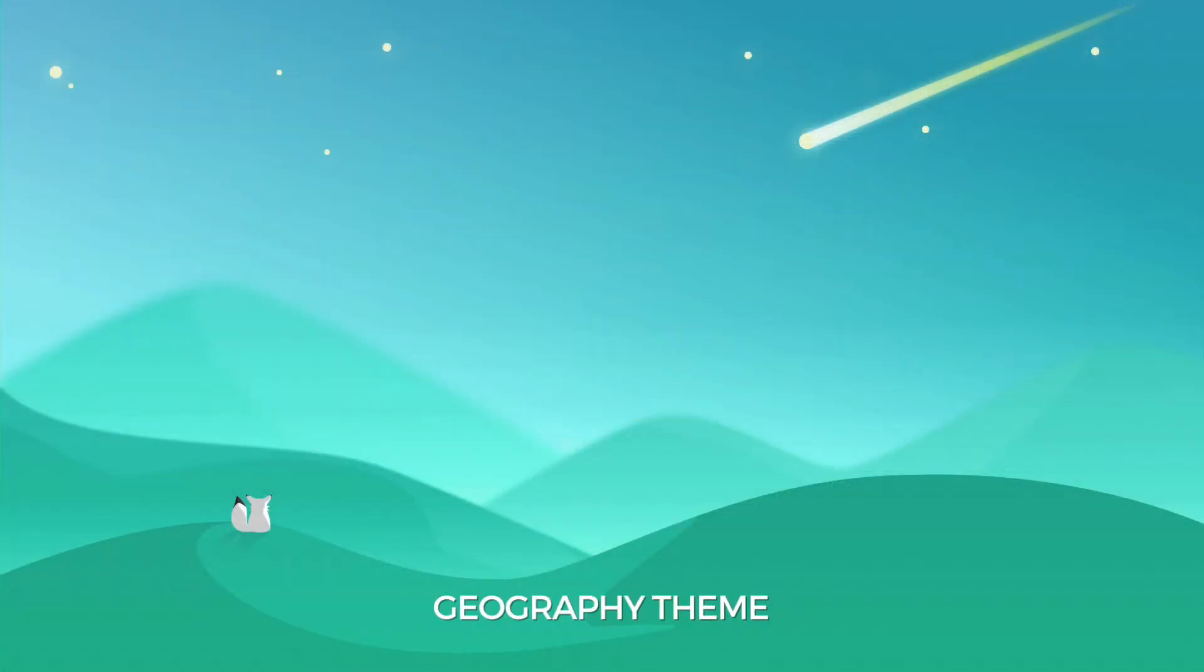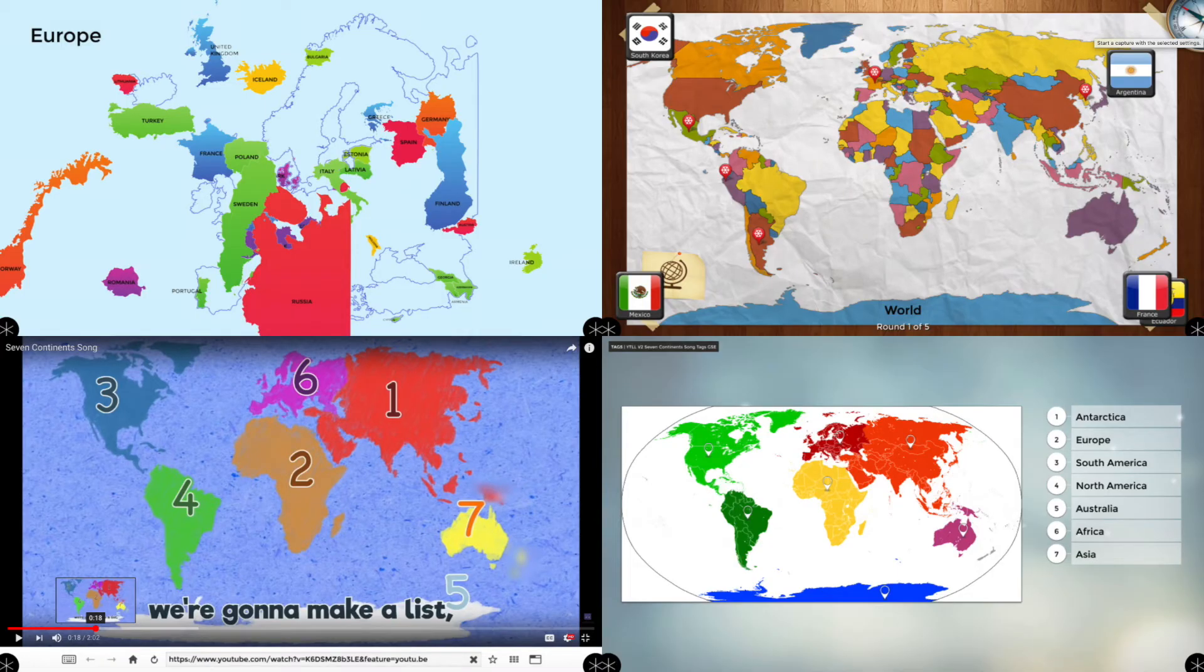Here is an example of how Multi-Teach can support a geography instructional theme. The Puzzle app's Geography round appears in the top left zone. The Geography app's World option is in the top right. A YouTube video is in the lower left zone and a Related Tags lesson is in the lower right zone.